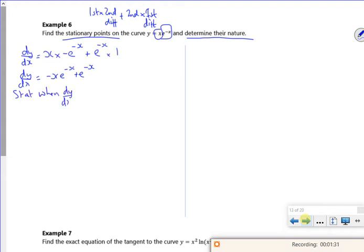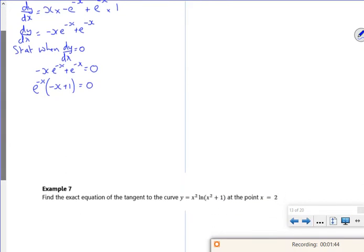When dy by dx is 0, so minus x e to the minus x plus e to the minus x is 0, I can take out e to the minus x as a factor. I've got e to the minus x is 0.